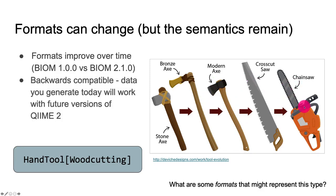The idea that formats can change over time is an important one. We learn more about how to represent data, or how best we can shrink file size or increase the utility of a different format. This is a really nice side effect of separating out the semantic meaning from the format. This also allows us to guarantee backwards compatibility — so results generated today in QIIME 2 will be backwards compatible with future versions of QIIME 2.